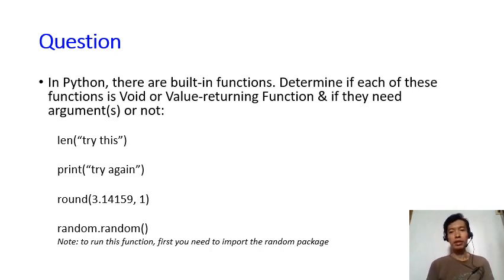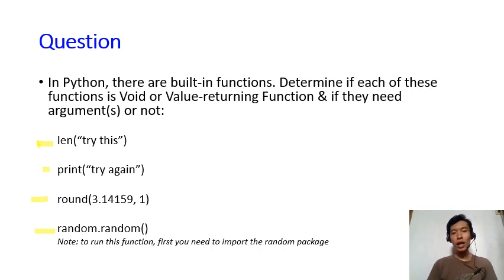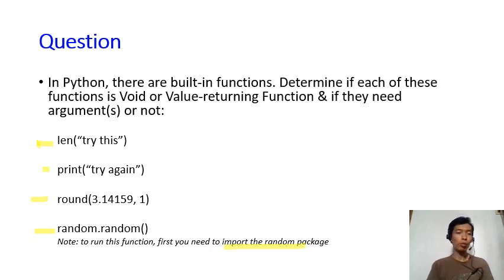Now, talking about Python, there are actually built-in functions in Python. I'd like you to determine if each of these functions is a void or value-returning function, and whether they need arguments or not. We have the len function, the print function, the round function, and the random function. You may try these in your Python console. For the random function, you first need to import the random package; the other functions don't require any import. There will be a pause on the video, and I'll return with the answers.